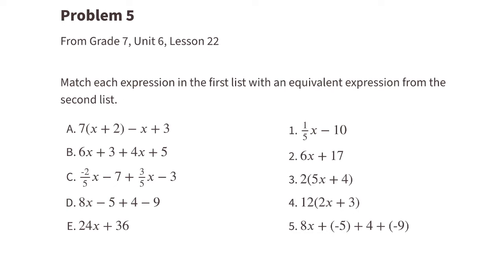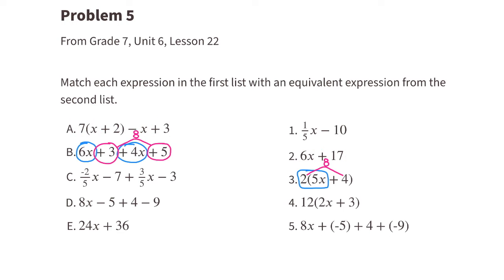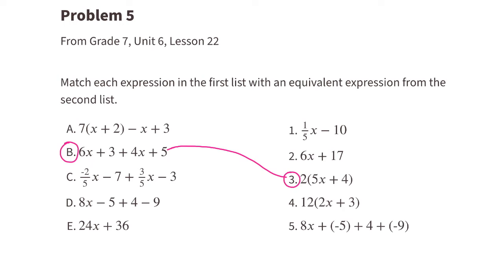Problem number 5, from 7th grade Unit 6, Lesson 22. Match each expression in the first list with an equivalent expression from the second list. Expression A has 7x minus x, which is 6x, and 7 times 2 plus 3 equals 17, giving 6x plus 17 — a match with expression 2. Expression B: 6x plus 4x is 10x, just like 2 times 5x; and positive 3 plus positive 5 is 8, just like 2 times 4. So B and 3 are a match.